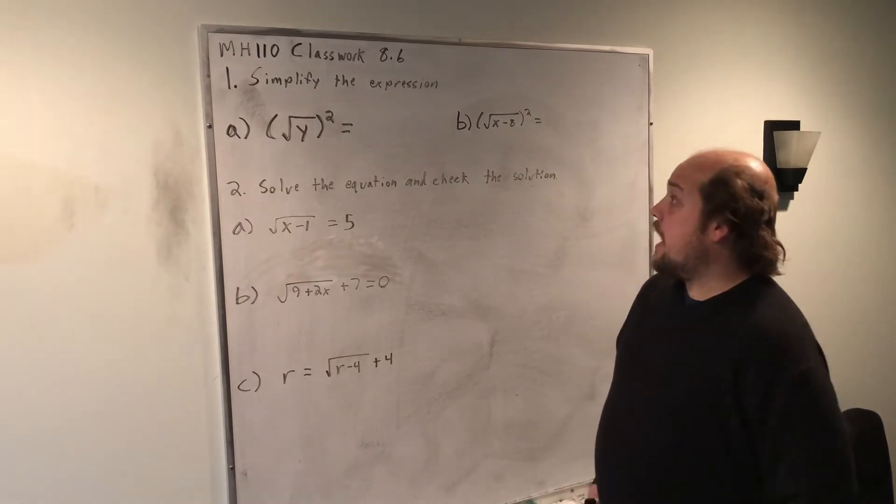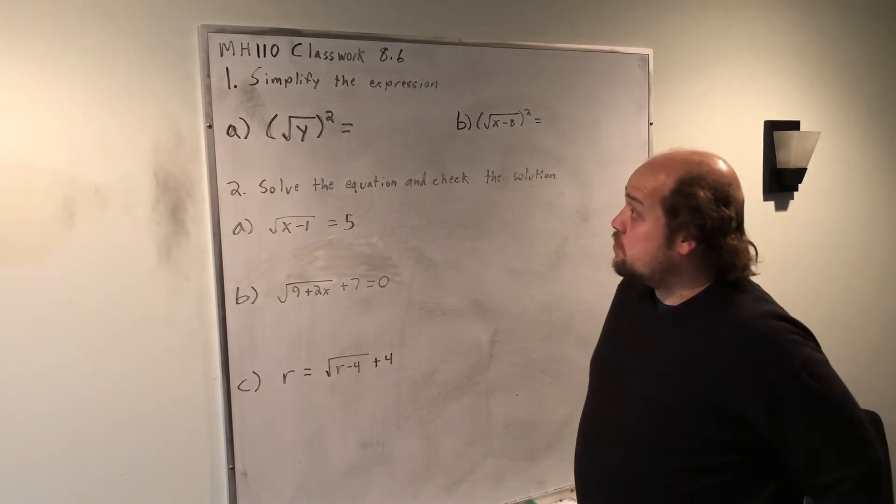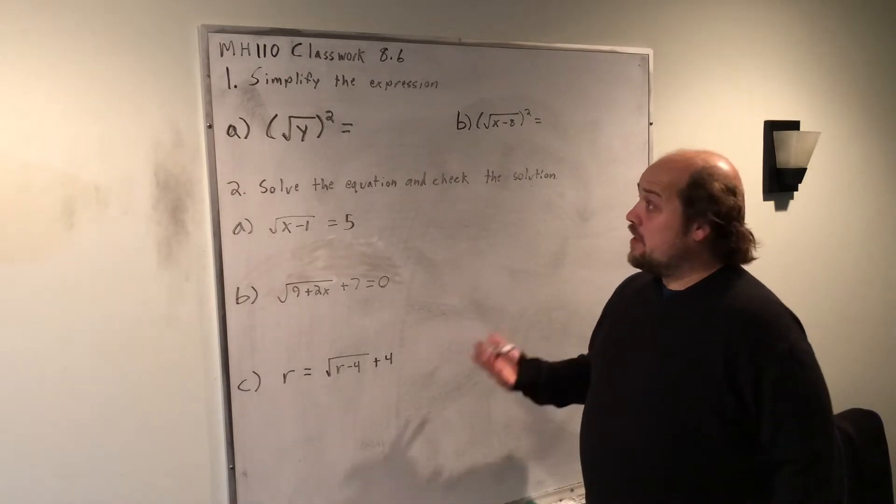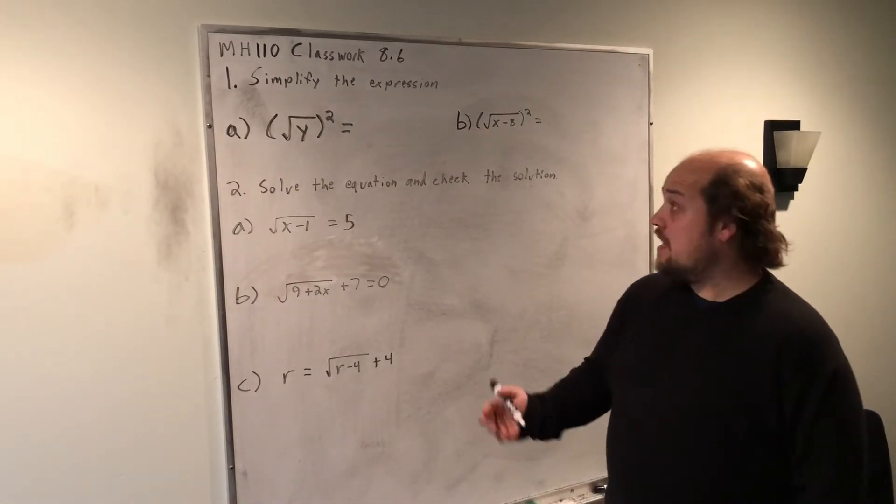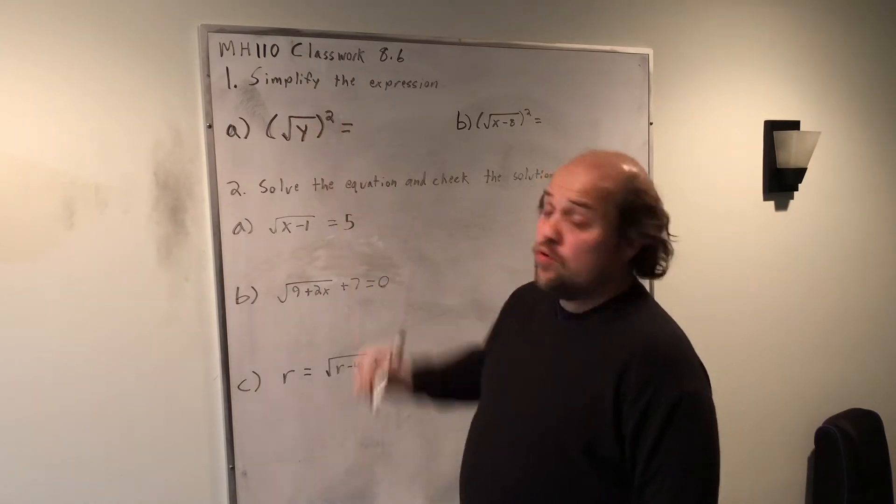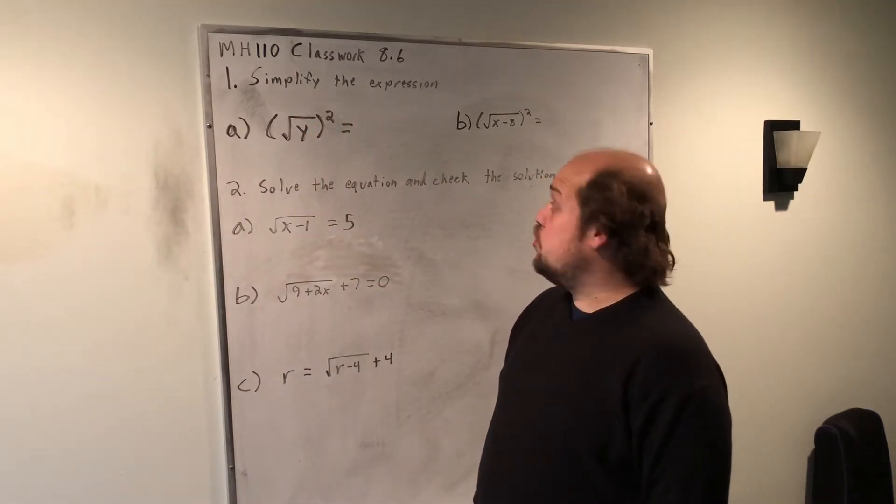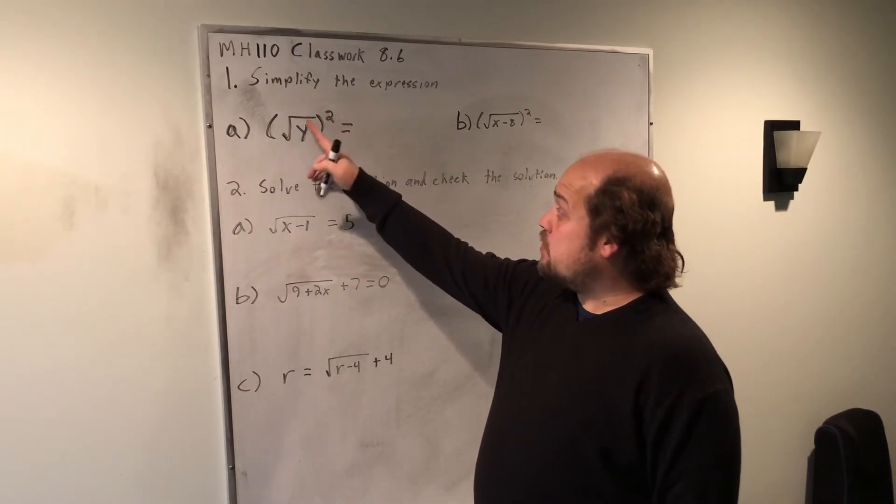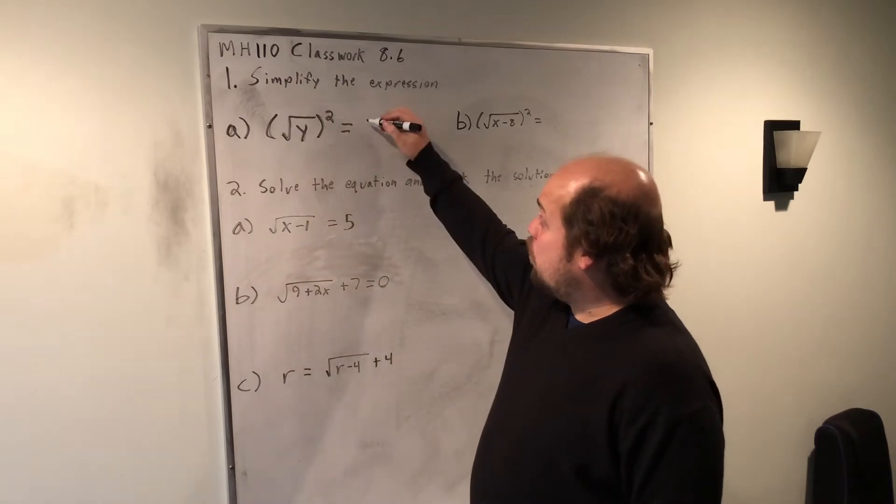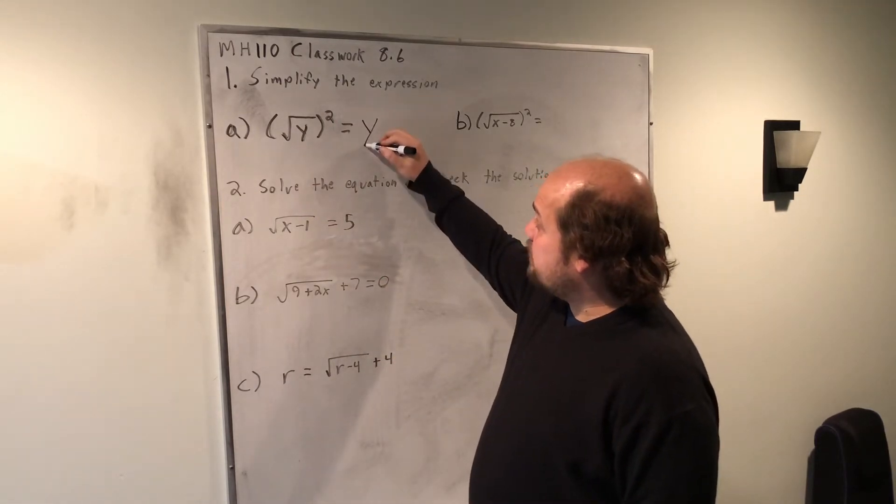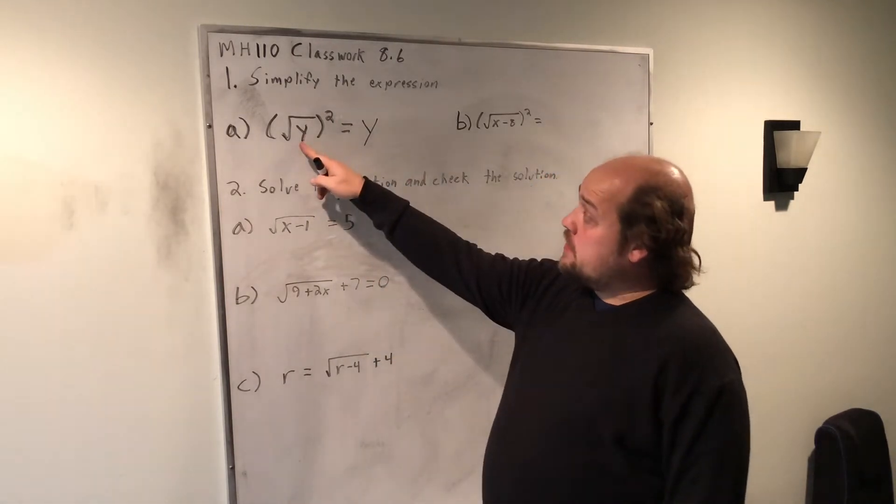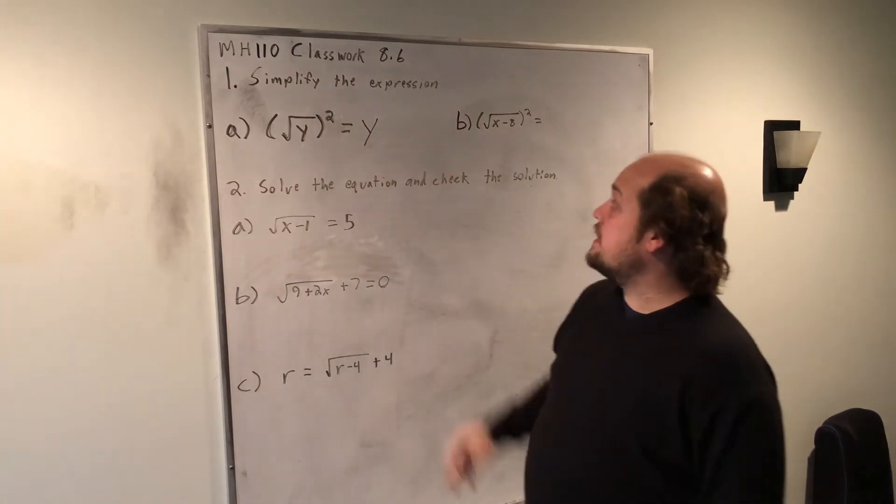So when I look at A and B on these Simplify the Expression problems, really all I'm doing is reinforcing the idea that a squared and a root are inverse operations that undo each other. So if we square something under the square root, what was under the root comes outside. In this case, y is under the root, so just y is the answer to the question.